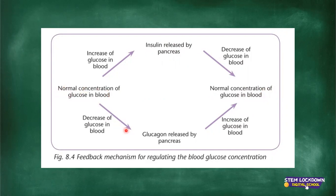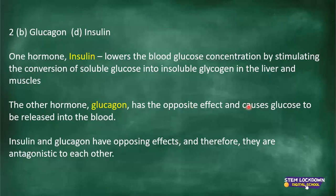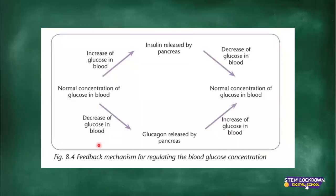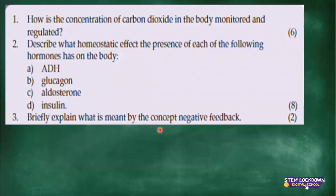If there's a decrease of glucose in the blood — maybe you haven't eaten enough — then glucagon will be released. Glucagon is involved in the conversion and production of glucose, causing glucose to be released into the blood. Then there will be an increase of glucose in the blood, and the concentration will return to normal. So insulin is the hormone that lowers glucose, and glucagon is the hormone that raises it.